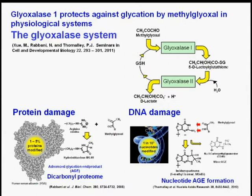A small amount of methylglyoxal that avoids metabolism provides for low levels of damage to proteins and DNA normally. This can increase in aging and disease.